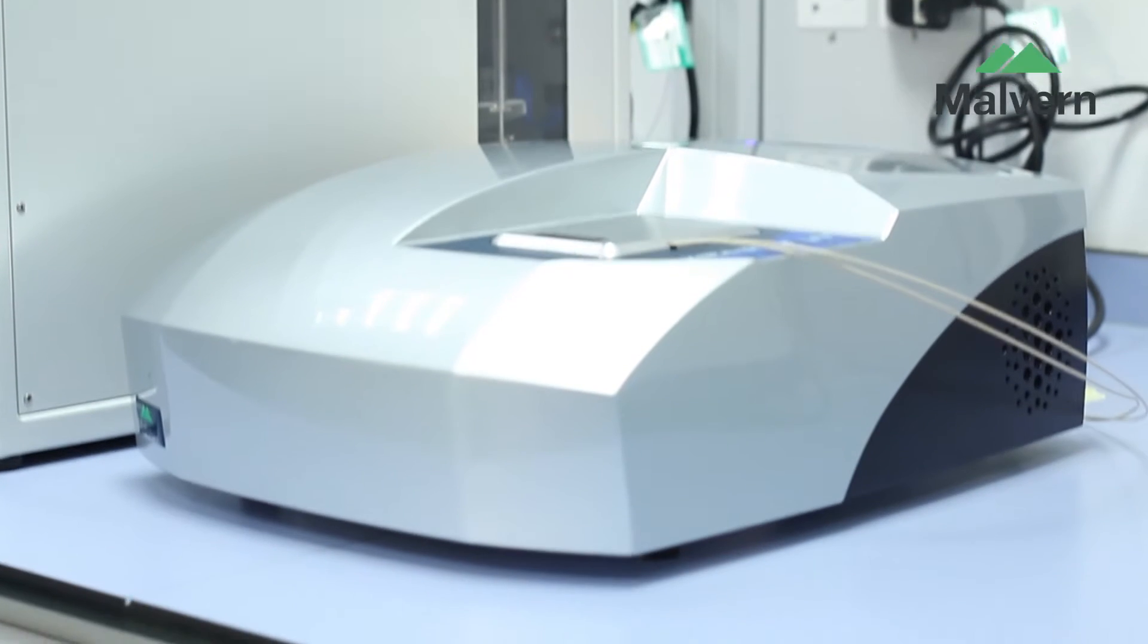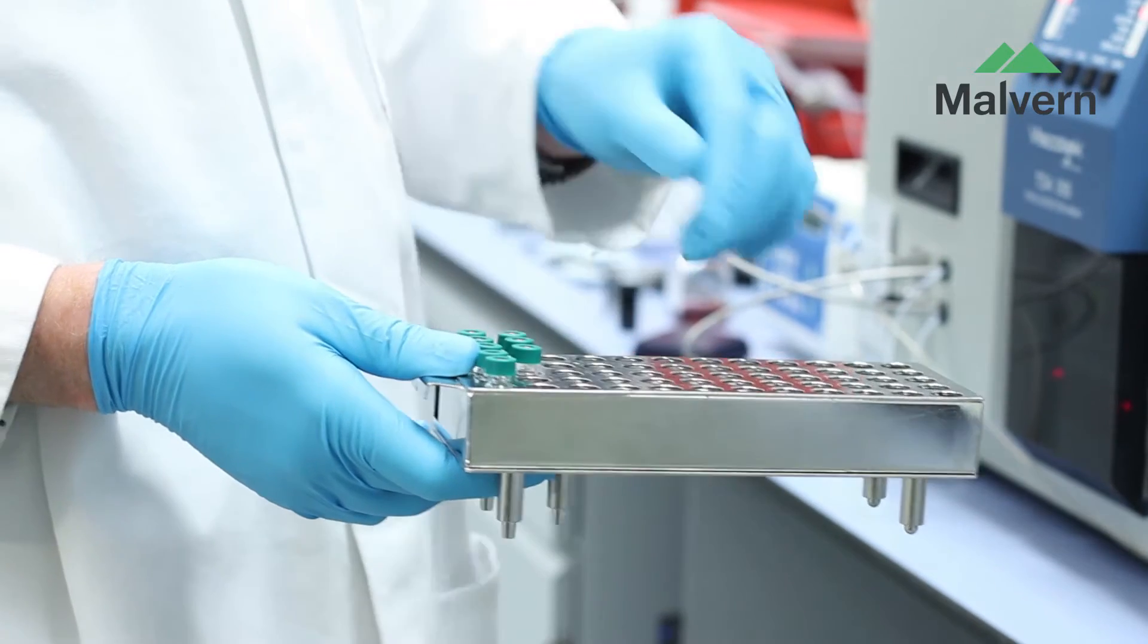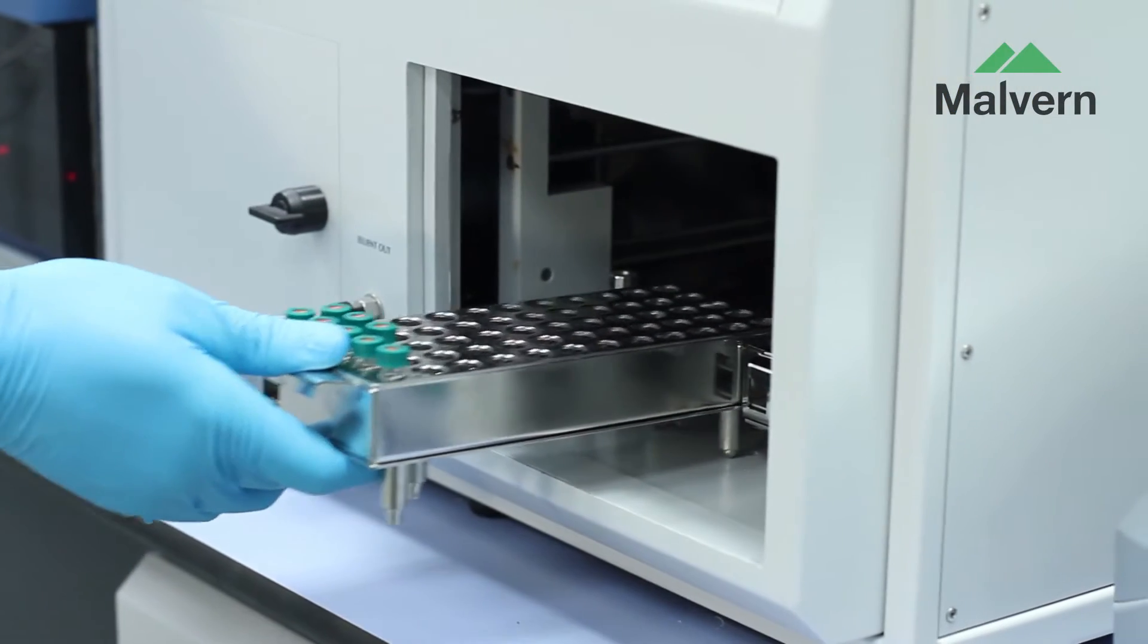Secondly, by simply changing the cell, it becomes an absolute molecular weight and size detector that can be added to any size exclusion chromatography system.